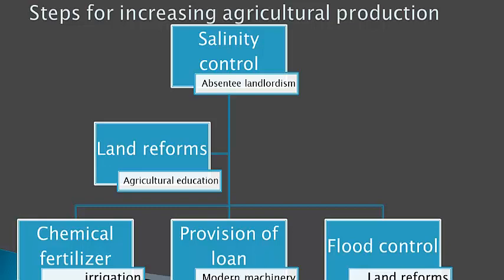Modern machinery — the use of modern machinery should be promoted in agriculture, and a campaign should be launched by the government to educate farmers so they move toward mechanization, leave behind traditional farming methods, and adopt modern machinery for better agricultural output.